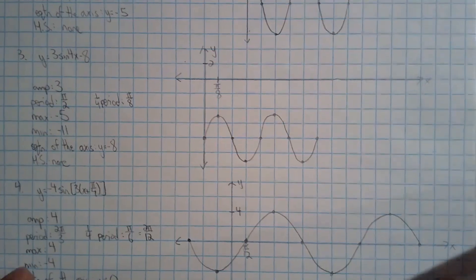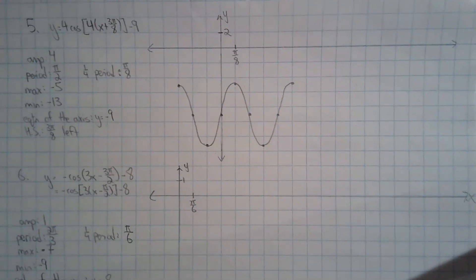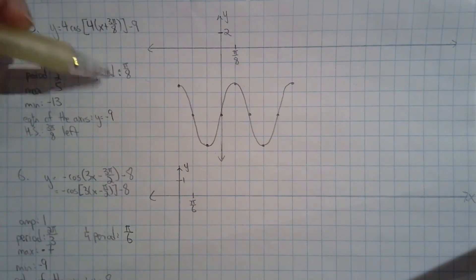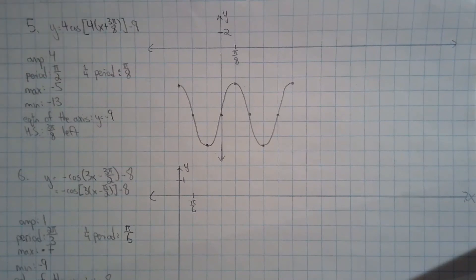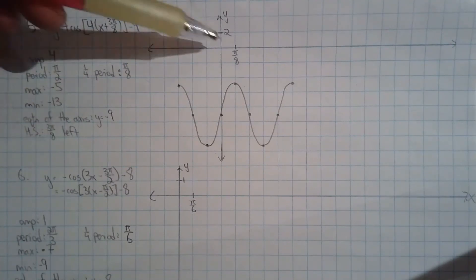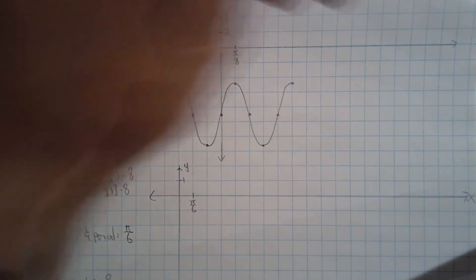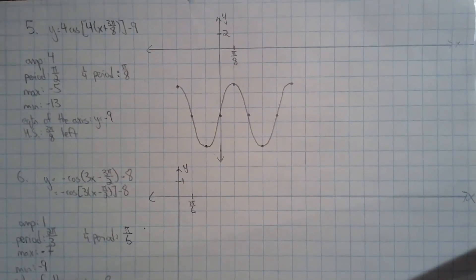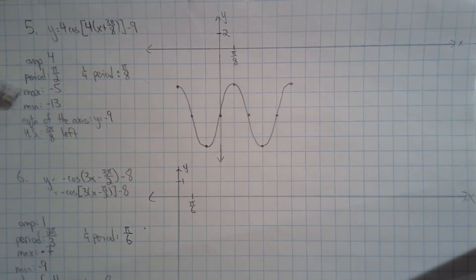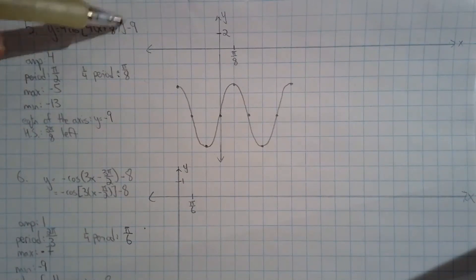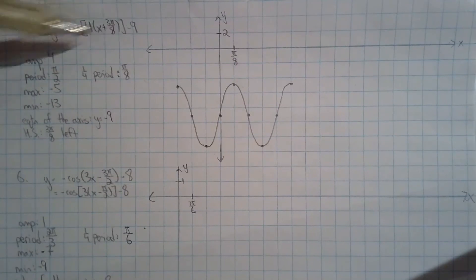Question five was pretty straightforward — the quarter period is π/8 and the horizontal shift is 3π/8 to the left. I did not need to do any manipulation because the denominators were already common. So I set my x-axis scaling to be π/8. If you're struggling to get the max and min value, you start at the middle — negative 9 — and you add four to get the top of the wave and subtract four to reach the bottom.